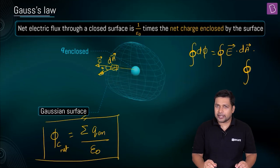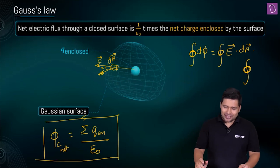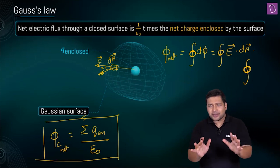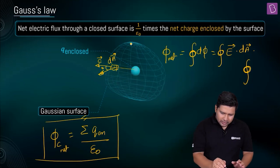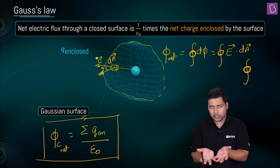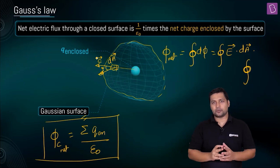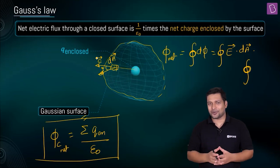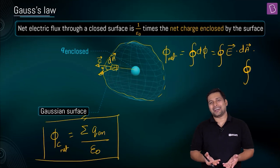You have to integrate over this entire surface, and many times this might get mathematically too complicated — even beyond the scope of our syllabus. By doing all this you are going to get phi-net. But Gauss's Law comes and tells you: don't worry, you don't have to do all that. All you have to see is what is the net charge that is enclosed within this Gaussian surface. You find that out, and then divide by epsilon-naught — that is the value of the net flux. That's it.